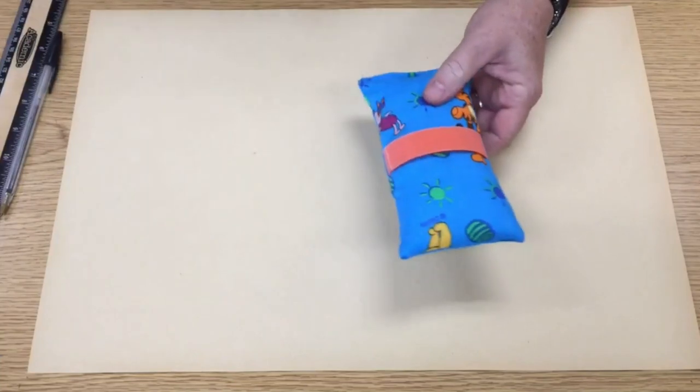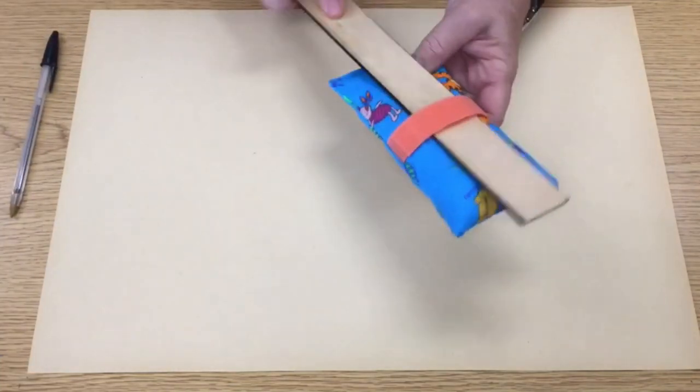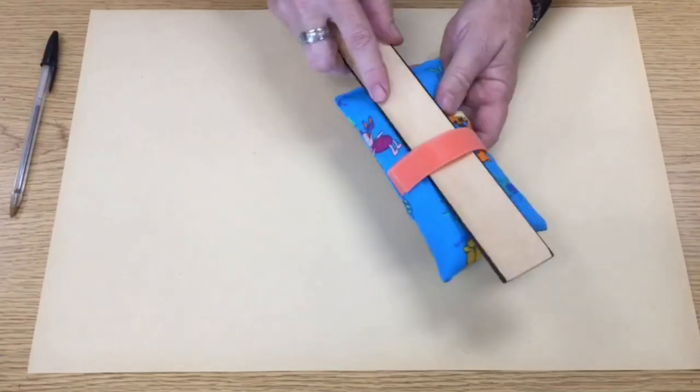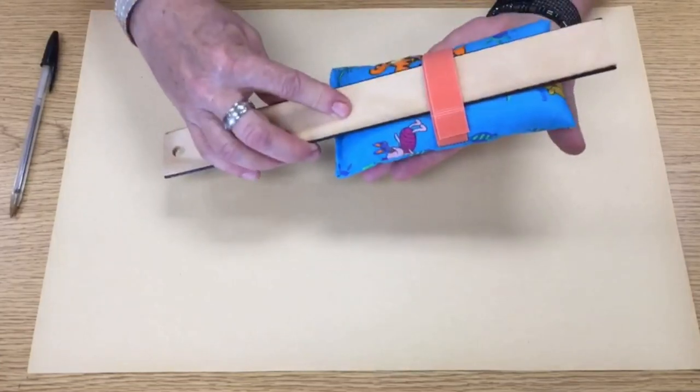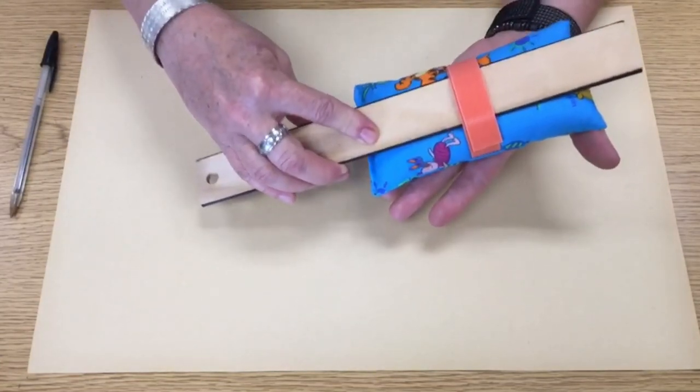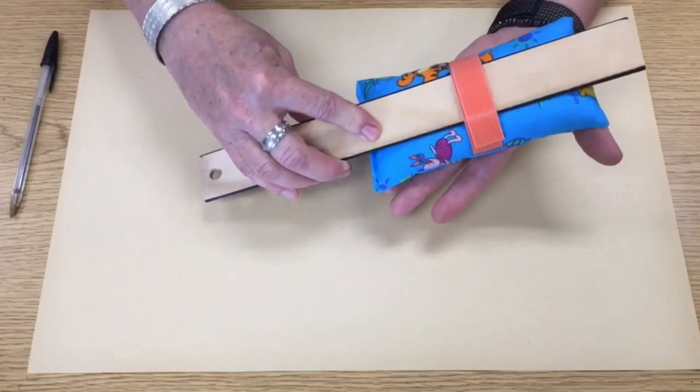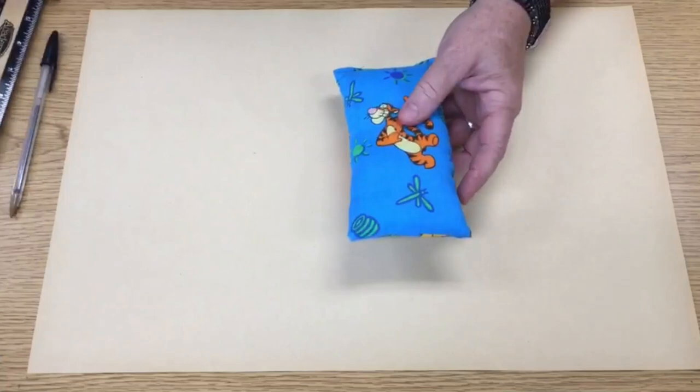They have velcro on the back and we're going to pretend this is the seat belt. You just undo the velcro and strap it on the seat belt and this side protects the port as they're wearing the seat belt and it holds it up off their body. So let's get started.